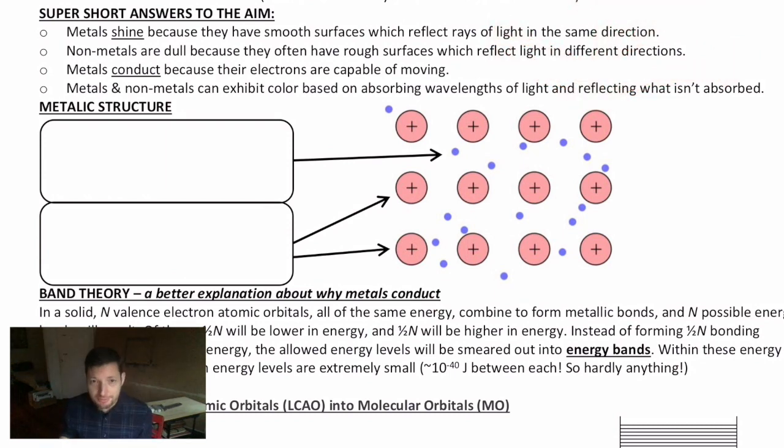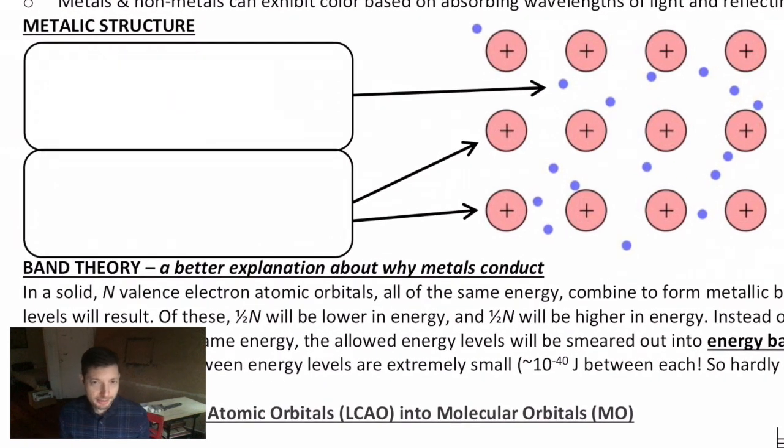Non-metals can be smoothed out to a shiny surface. It's just easier to do it with metals. More so, metals conduct because of their electronic arrangement. Their electrons are capable of moving. And here I have a picture that illustrates what the electronic arrangement of a metal is in very simple terms. You probably learned this in a previous chemistry course.